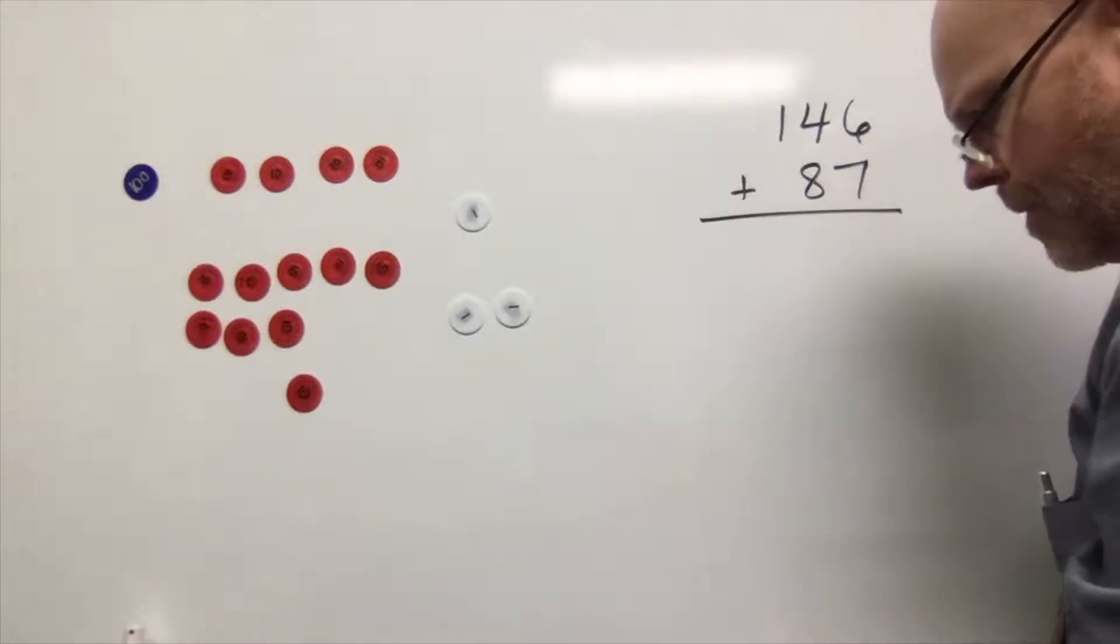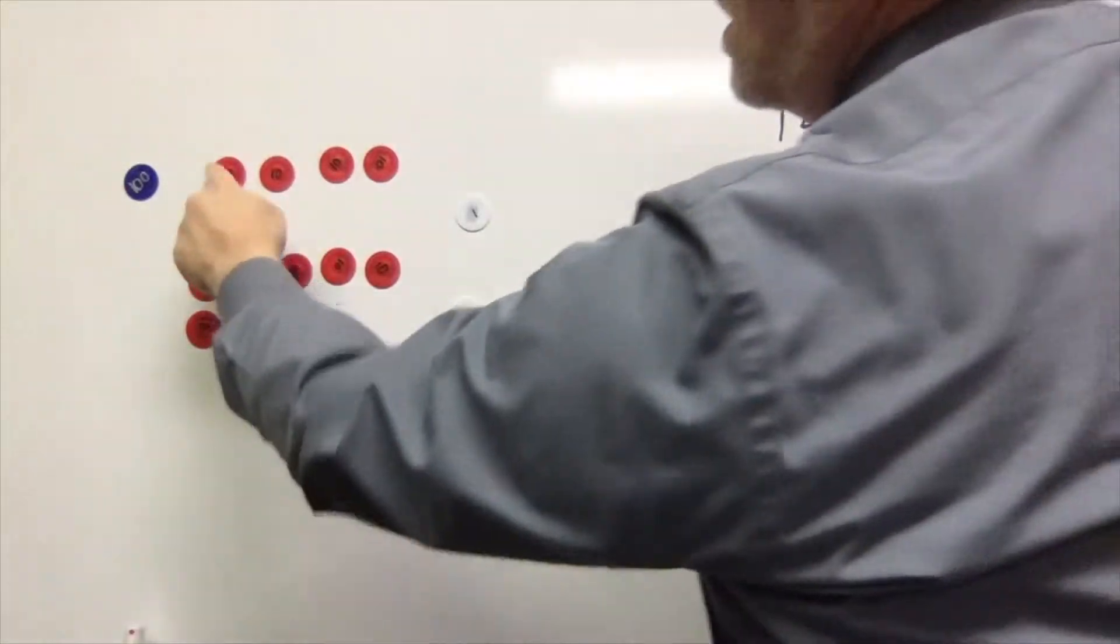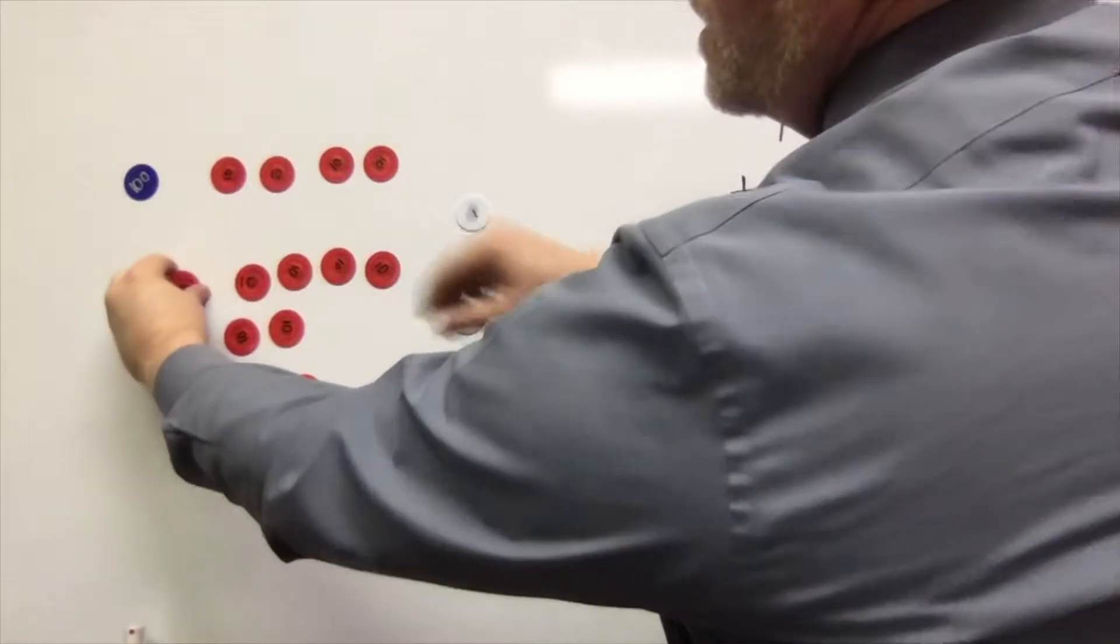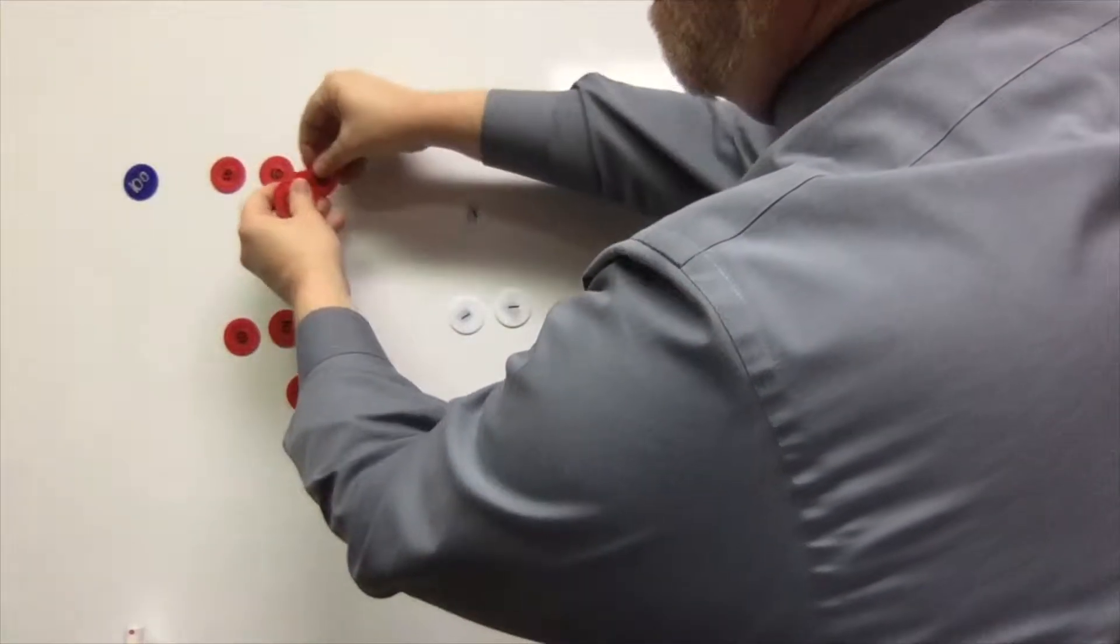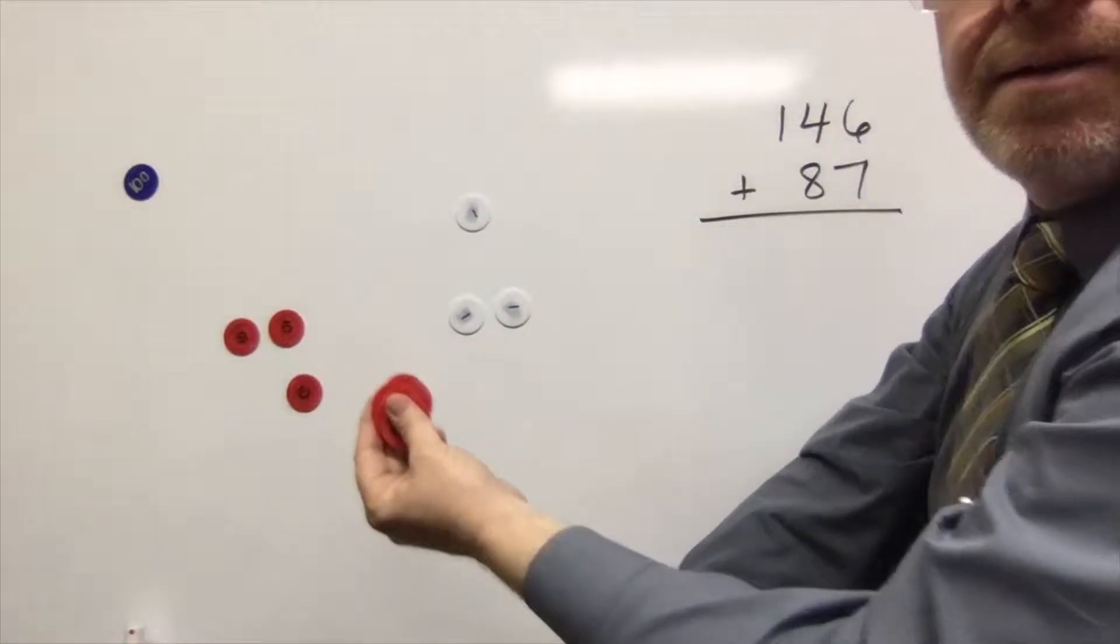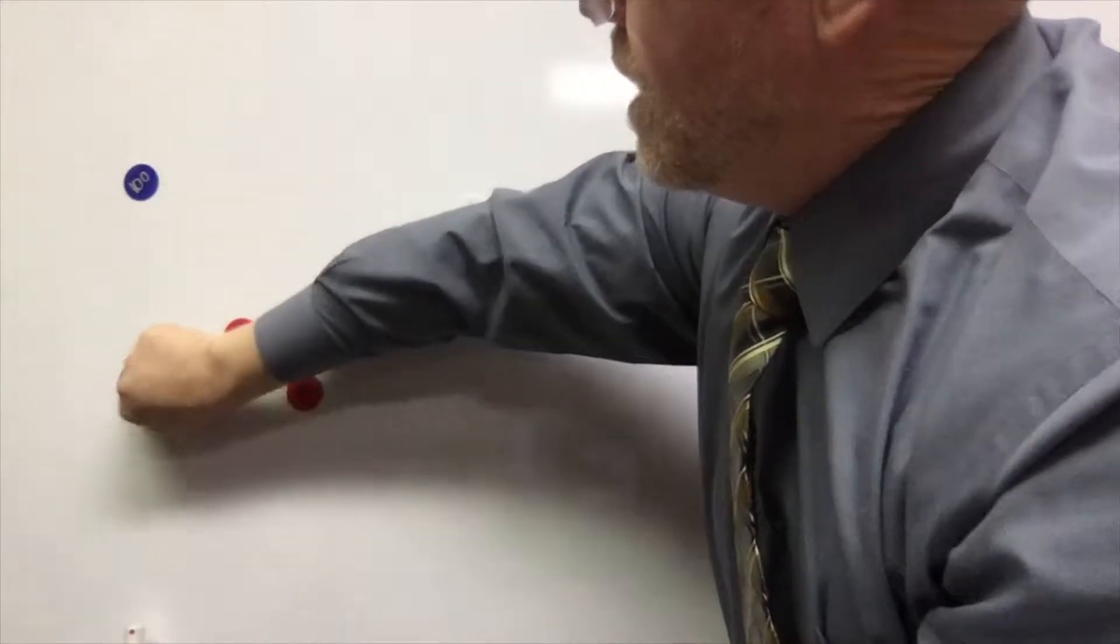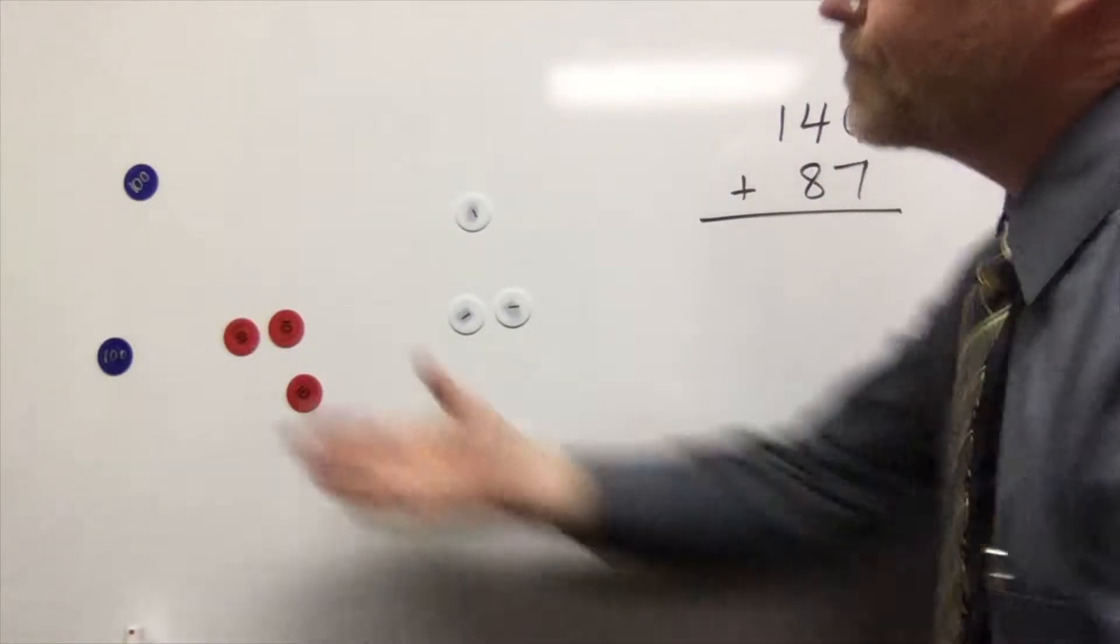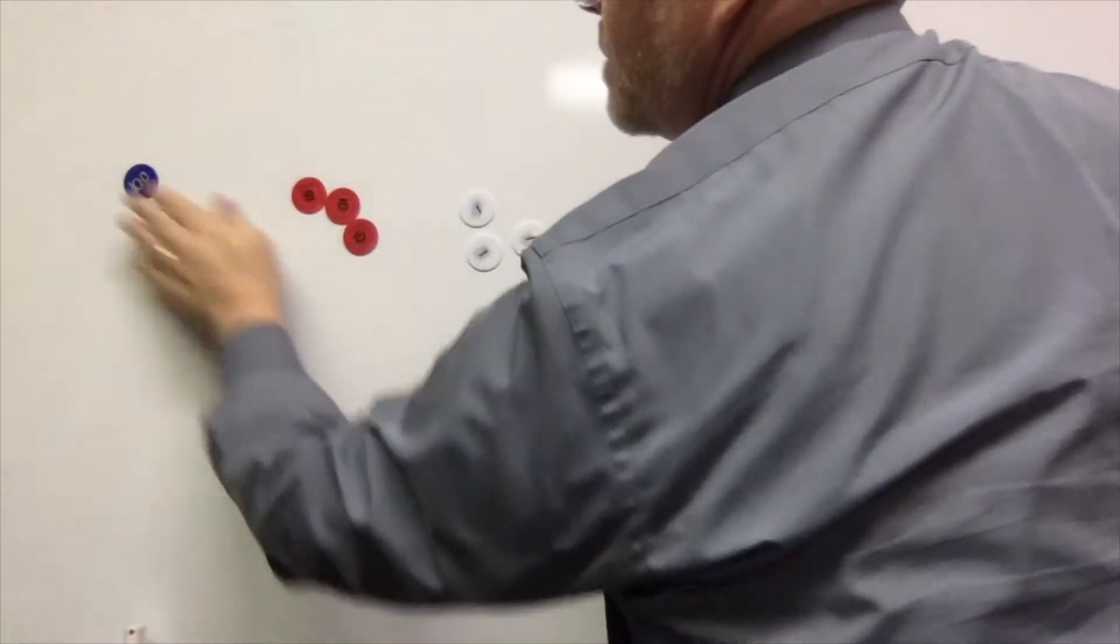And now I can see, do I have enough tens to cash in? Well, let's see. One, two, three, four, five, six, seven, eight, nine, ten. Ah, yes we do. So these 10 tens can be cashed in for a hundred. So here's my hundreds, these 10 tens go away because I'm cashing them in for 100. And now it doesn't look like we have any more values that could be cashed in.